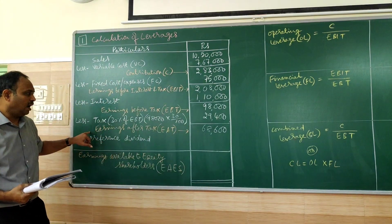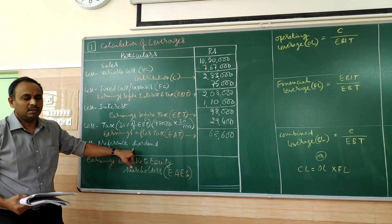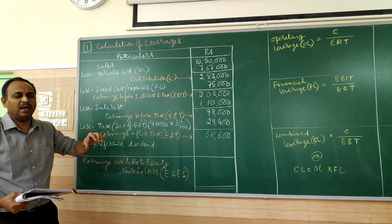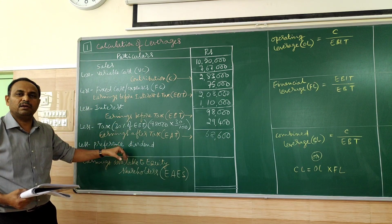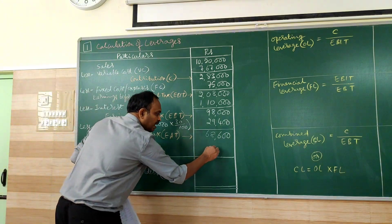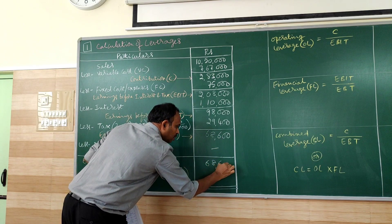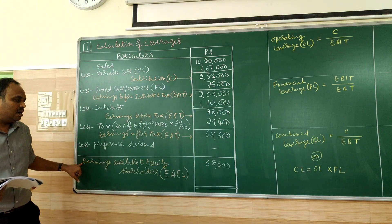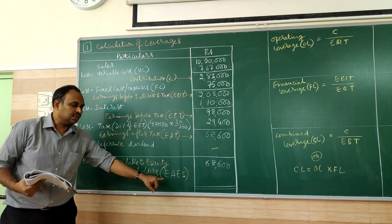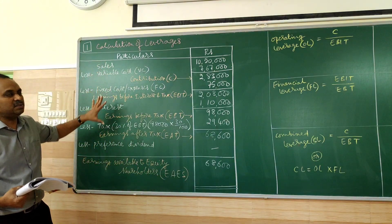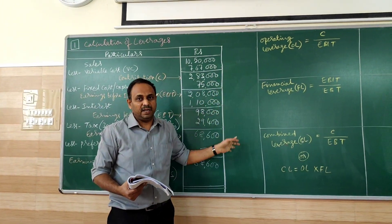The result is 68,600. The result is earnings after tax. Then preference dividend. Preference dividend will be there only when the problem says preference shares are there. Otherwise it is nil. So when it is nil, we carry the same amount of EAT. That will be EAPS, earnings available to equity shareholders. So this gives the information required for us to calculate the various leverages.